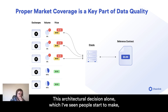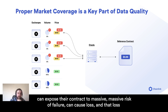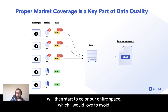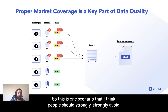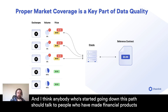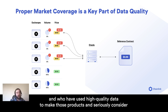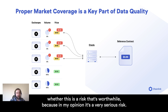This architectural decision alone, which I've seen people start to make, can expose their contract to massive, massive risk of failure. It can cause loss, and that loss will then start to color our entire space, which I would love to avoid. So this is one scenario that people should strongly avoid. Anyone who's started going down this path should talk to people who have made financial products and used high quality data, and seriously consider whether this risk is worthwhile. In my opinion, it's a very serious risk.